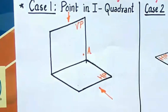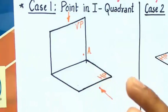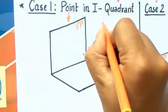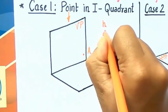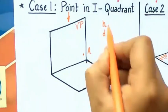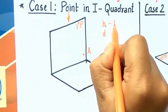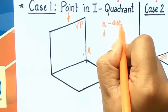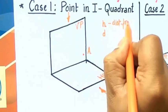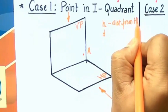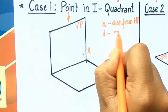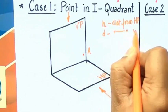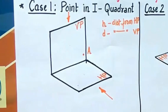The next thing I'll be telling you is some notations in the form of H and D. Please remember: H is for distance from HP (horizontal plane), and D is for distance from VP (vertical plane). The distance D is in front of the vertical plane, and distance H is above the horizontal plane.